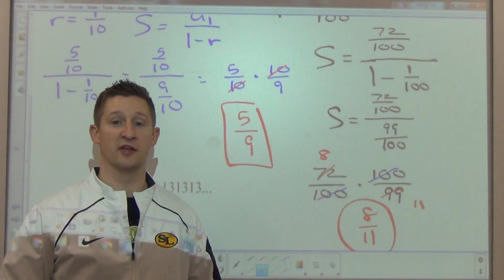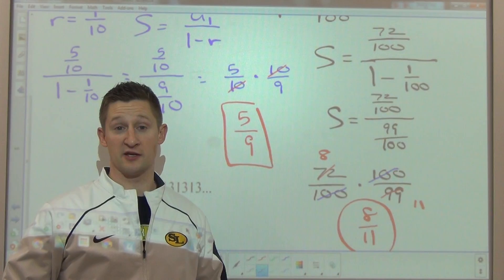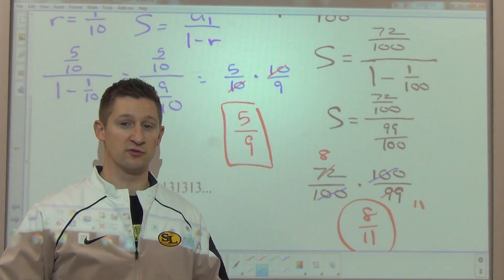Type it in the calculator, check it out. You'll find that it's point-seven-two repeated. So just a neat little connection with repeating decimals matching up with the sum of an infinite geometric series.